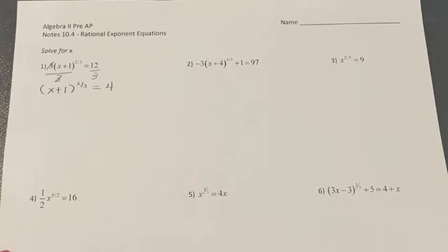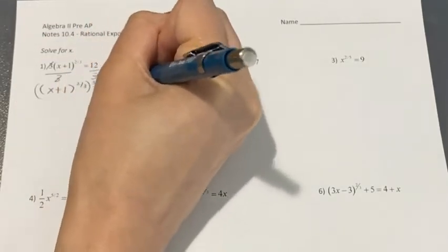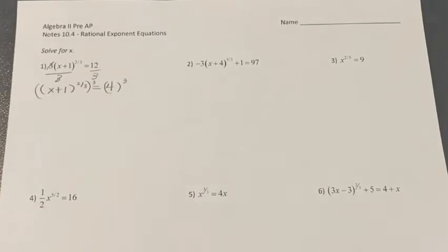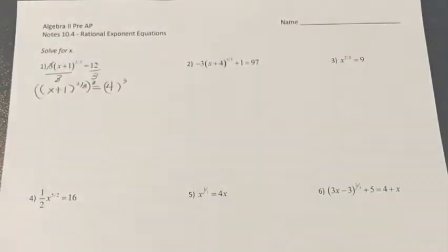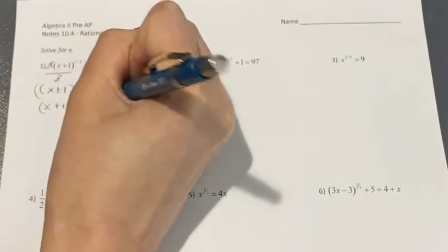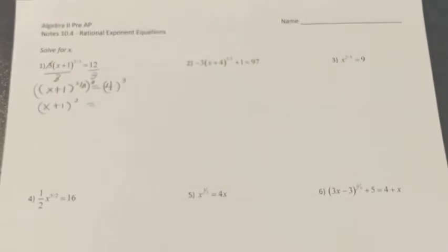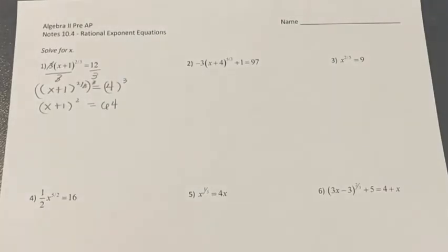After that, you need to raise both sides to the power of three. This three exponent cancels the one-third, so you have x plus one to the power of two, and this is going to be equal to four to the power of three, which is 64.